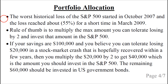So how do you allocate your portfolio between the S&P 500 and US government bonds? Well, the worst loss for the S&P 500 started in October 2007, and the loss reached about minus 55% for a short time in March 2009, so it lost more than half. The rule of thumb is to multiply the max amount you can tolerate losing by two and invest that amount in the S&P 500 and the rest in US government bonds.